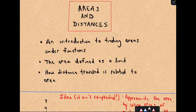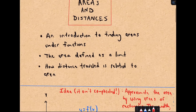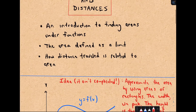Hey everybody, this is Patrick JMT, and I'm partnering with Chegg. Here we're going to talk about areas and distances — a topic you would typically encounter in a second semester calculus course. We're going to do a little introduction to finding areas under functions. We'll talk about the area defined as a limit, because eventually we'll use that limit to compute areas. We'll derive it, and in some other videos we'll actually use that limit definition to compute the exact area. Then we'll talk about how distance traveled is related to area.